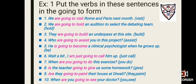Number seven: 'When ___ this exercise?' Since we're talking about 'you,' we use 'are' — 'When are you going to do this exercise?' Number eight: '___ the teacher gives us some homework.' We're talking about the teacher, which is singular, so we use 'is' — 'Is the teacher going to give us some homework?'